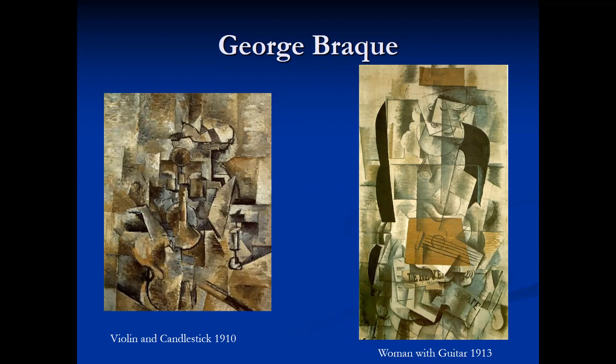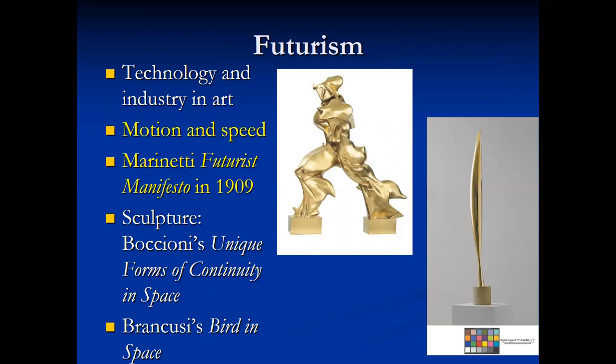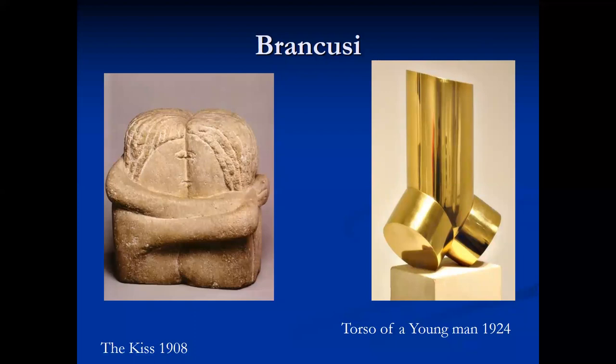Another movement of the modernist period is Futurism. Futurists incorporated technology and industry in art and celebrated motion and speed. Their ideas were based on the writing of Italian poet Marinetti, who wrote the Futurist Manifesto in 1909. Examples of Futurist sculpture include Boccioni's Unique Forms of Continuity in Space on the left and Brancusi's Bird in Space on the right. You can see in these two Brancusi works the contrast between his 1908 sculpture The Kiss and his 1928 Futurist work Torso of a Young Man.